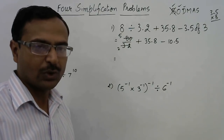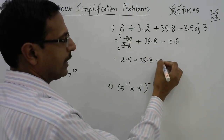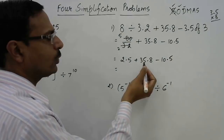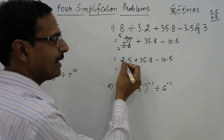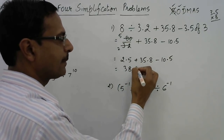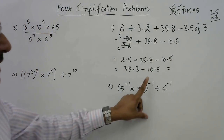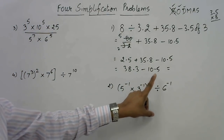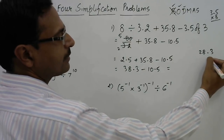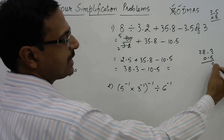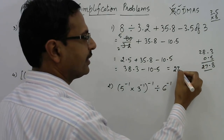The next step will give you the answer. 5 upon 2 is 2.5. Now 35.8 plus 2.5 gives 38.3, and 10.5 is to be subtracted. 38.3 minus 10 is 28.3, and subtracting 0.5 further gives 27.8. This is the required answer to the first question.